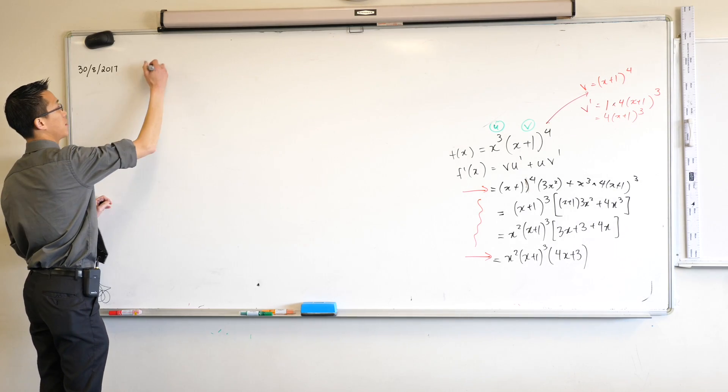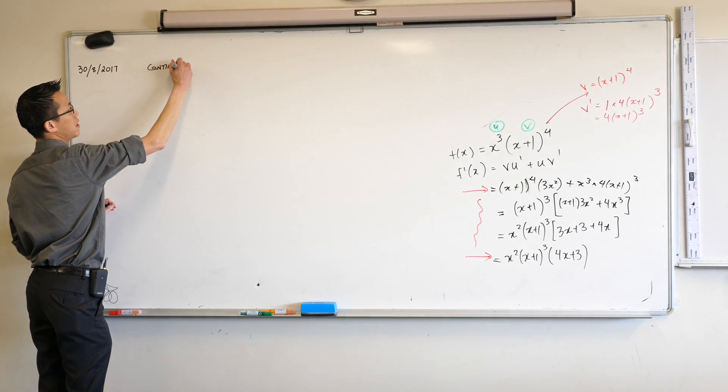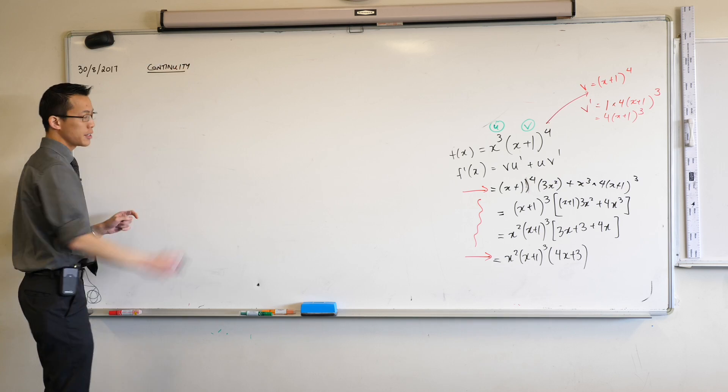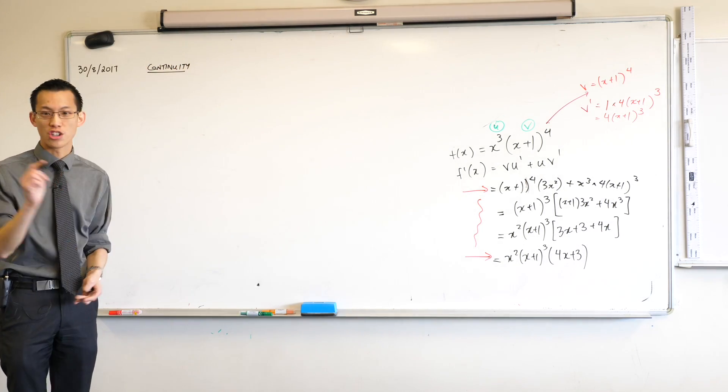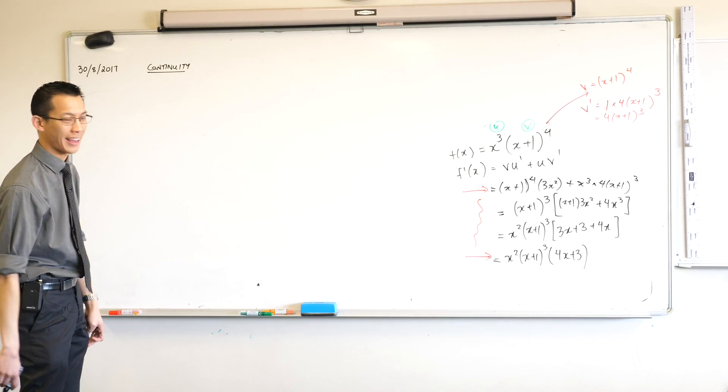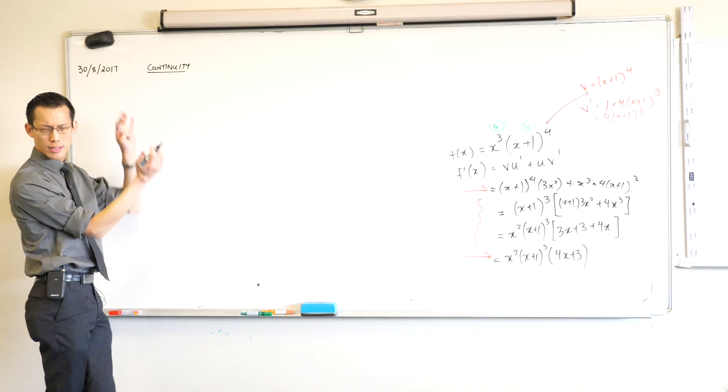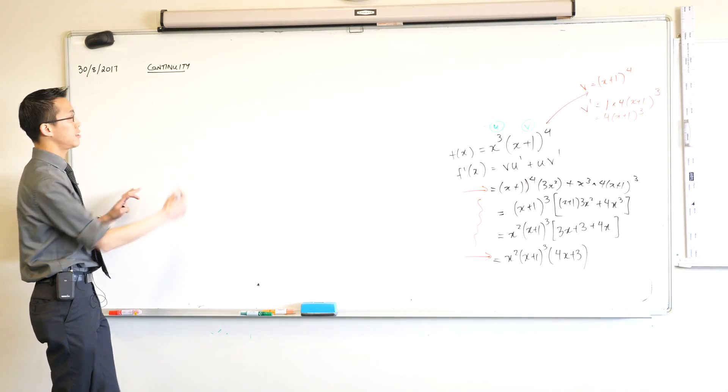Okay, continuity. I'll give you the definition first. So maybe you want to jot this down. Continuity. Of course our informal definition I think is probably best. You can draw the thing and never lift up your pen, okay? But that won't do for proving that something is continuous. So here is the definition.